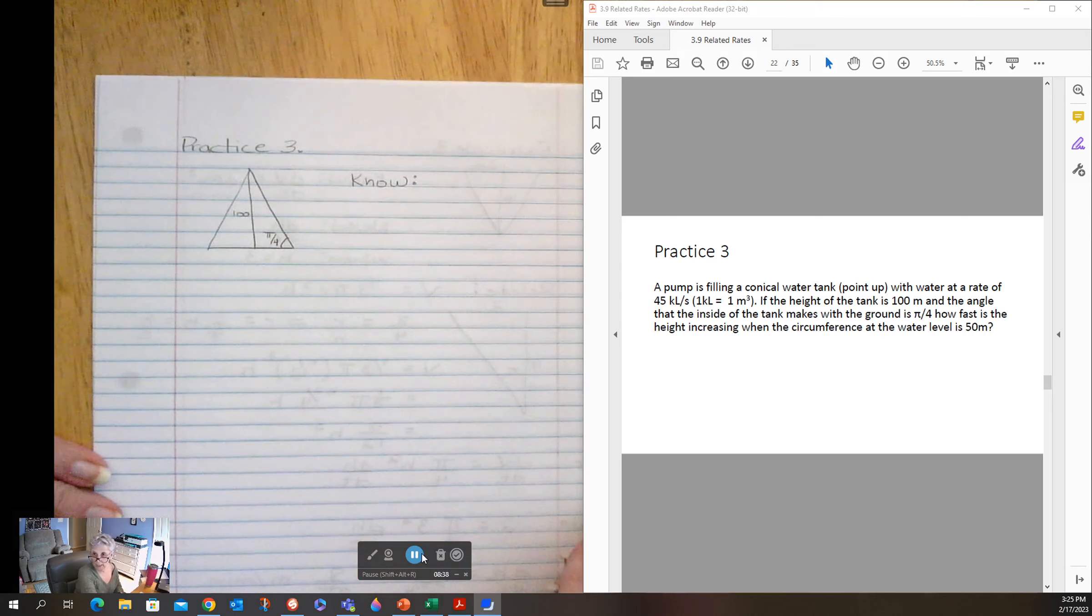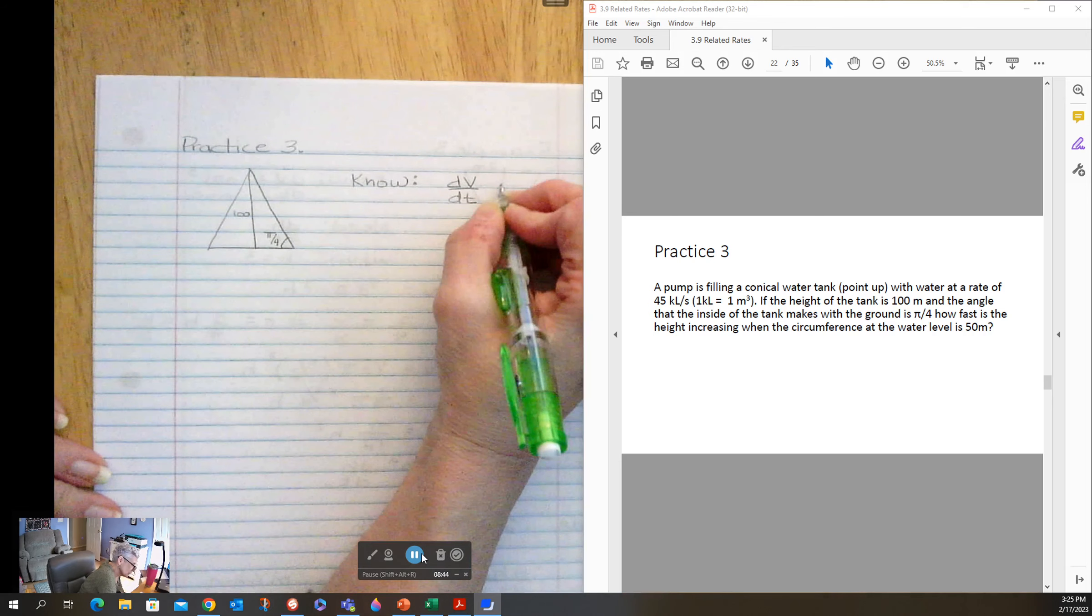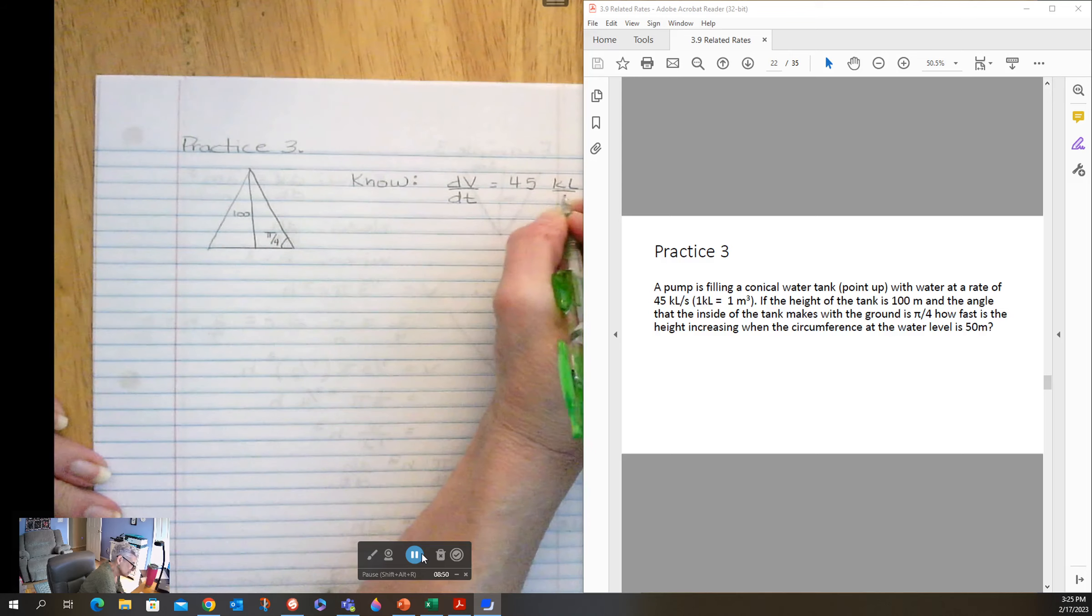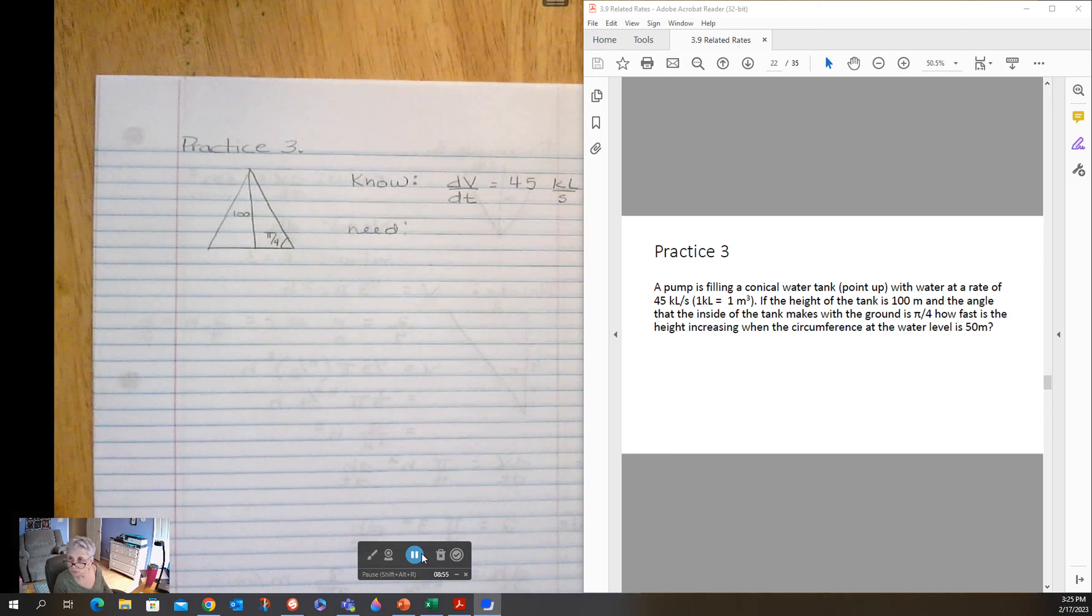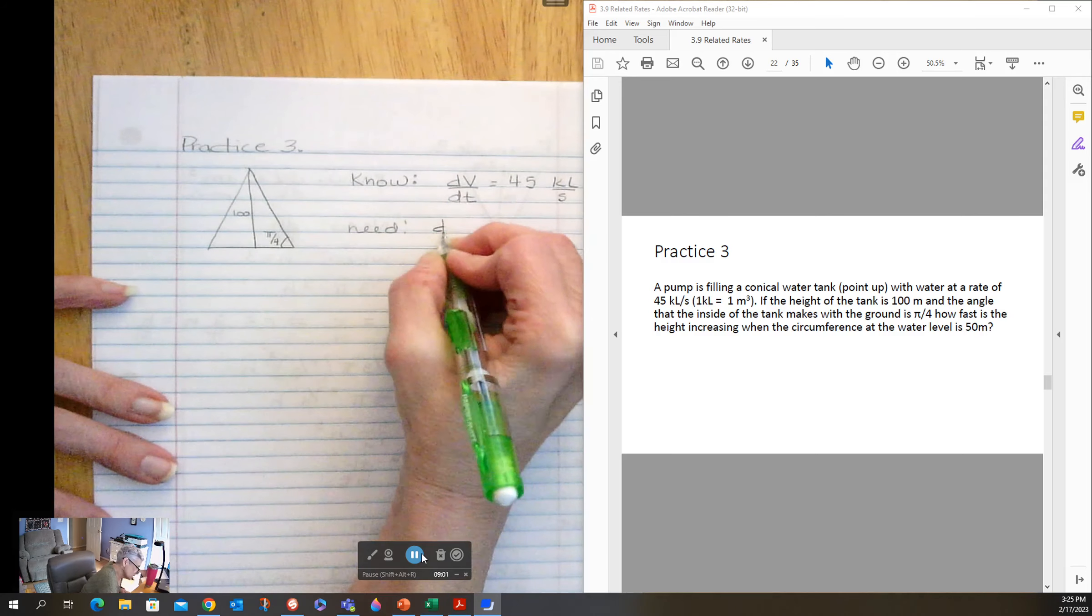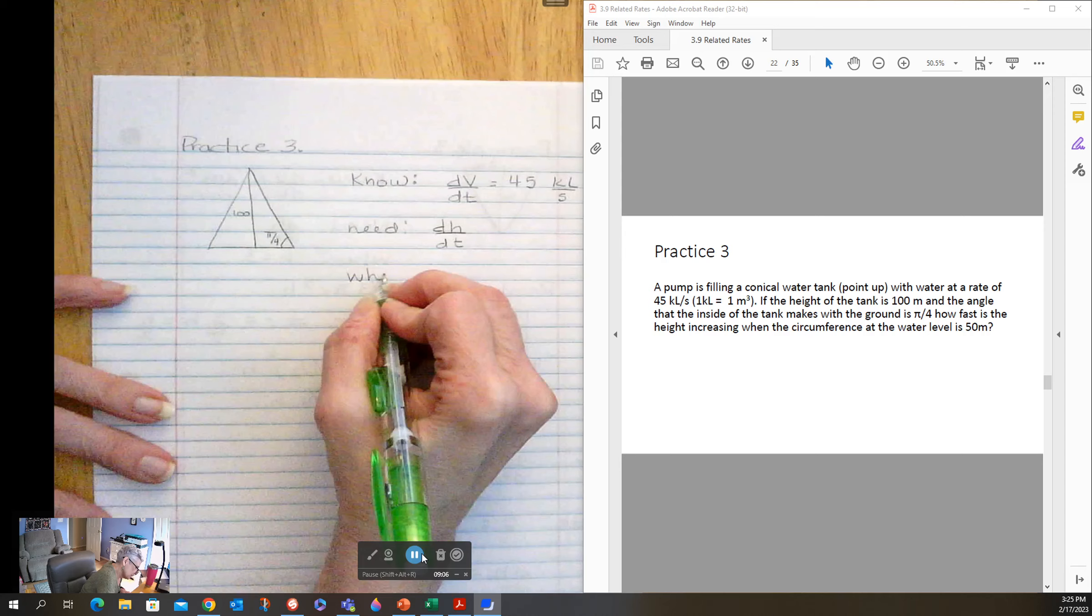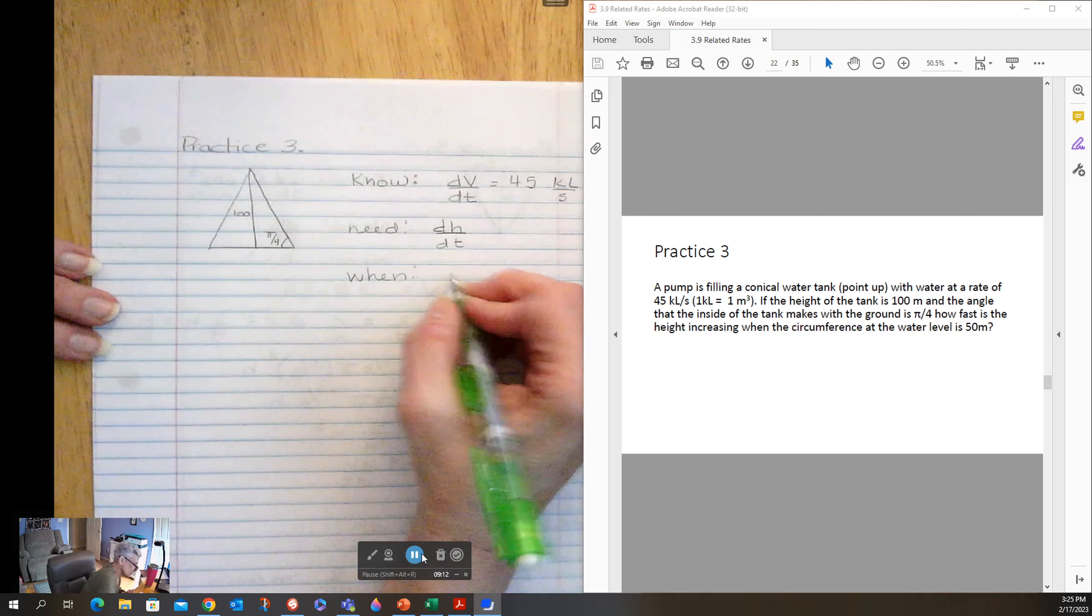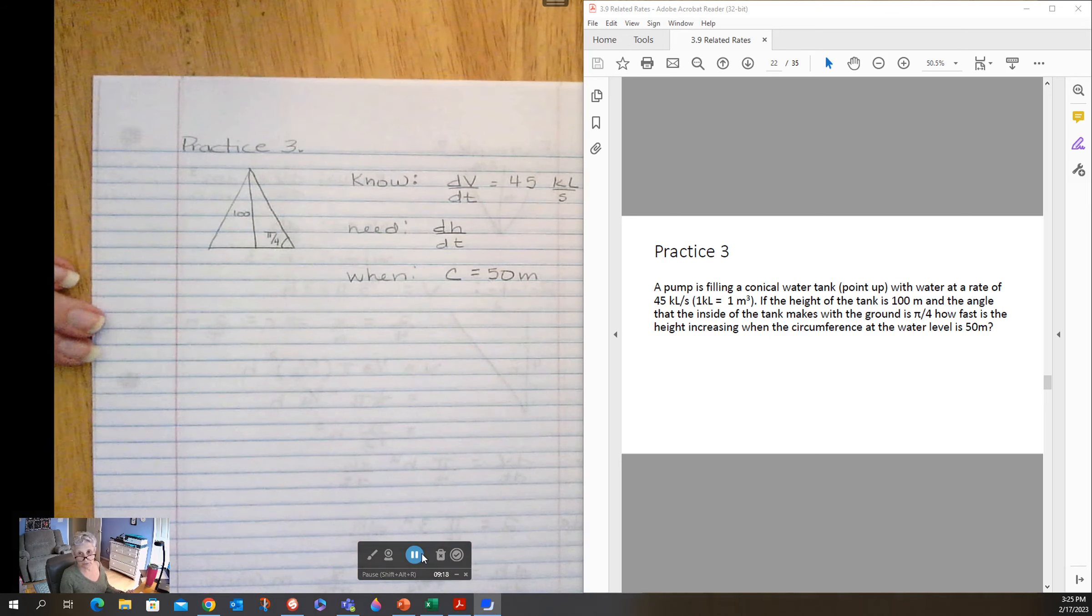No, I know the change in volume. It is 45 kiloliters per second. I need: how fast is the height increasing? So I want dH/dt again. But this time my win, circumference at the water level is 50 meters. So circumference equals 50 meters.